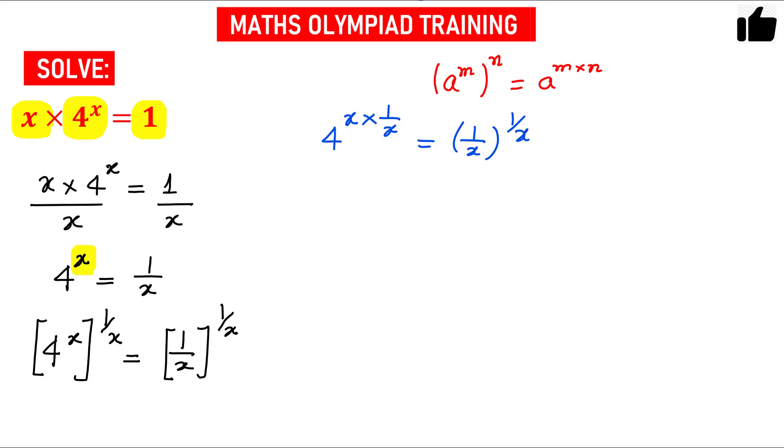Now this x cancels out, so this x and this x cancels out. So I will have 4 equals 1 by x raised to the power 1 by x. You see, I have a number that is the base and the exponent is also the same number.